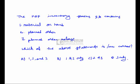The MRP inventory status file contains: material on hand, planned order, and planned order release. Which statements are correct? The options are 1 only; 1, 2 and 3; 1 and 2 only; 2 and 3 only; or 3 only. Generally, the MRP inventory status file contains material on hand and planned order, but it does not contain planned order release. The correct answer is B: 1 and 2 only.